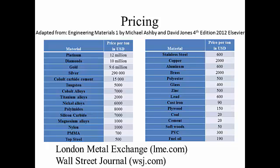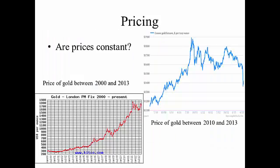Prices change daily — they're not constant. The price of gold varied tremendously between 2010 and 2013, as you can see on the right. It had a sharp increase in 2011, then leveled off toward 2018. And if you look at the price of gold from 2000, it went six times in price between 2000 and 2011.